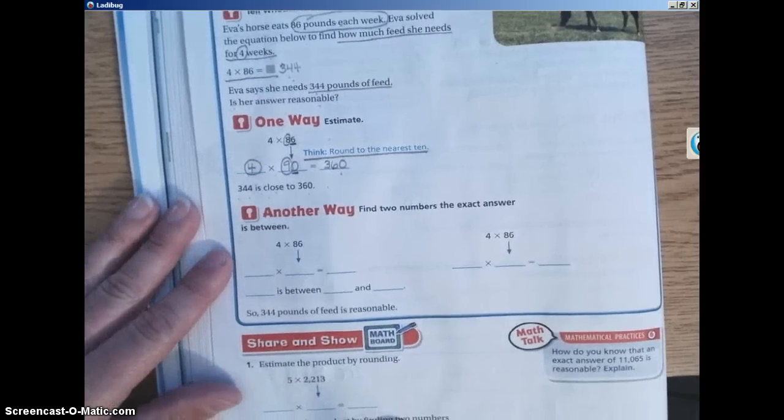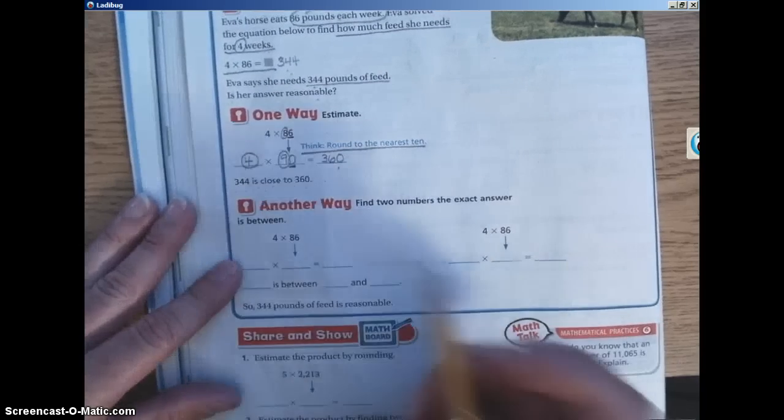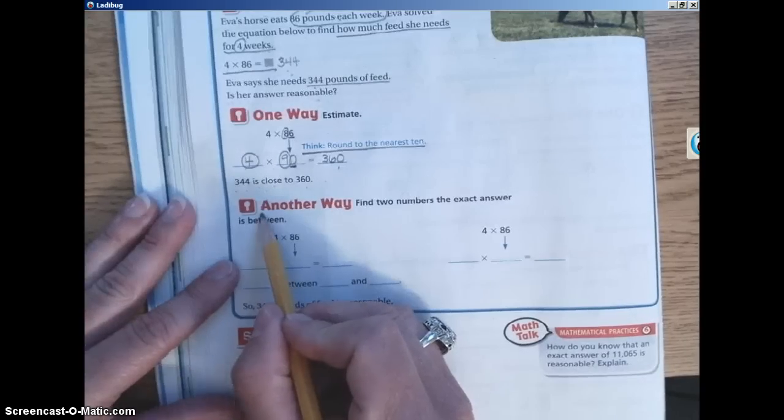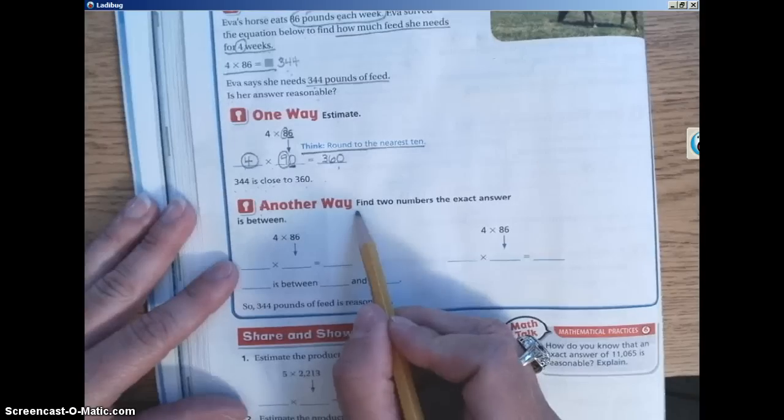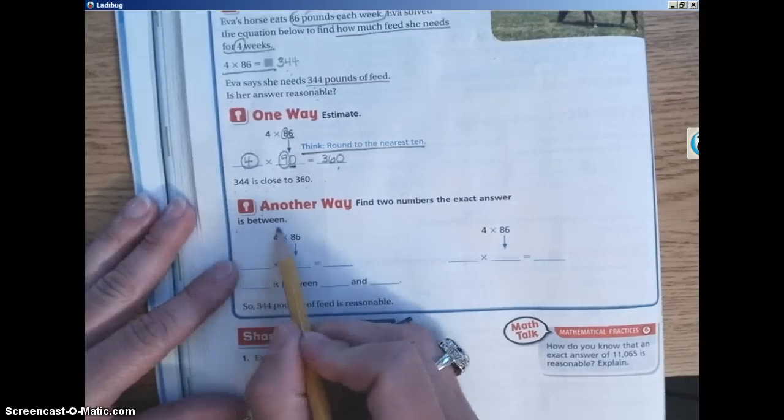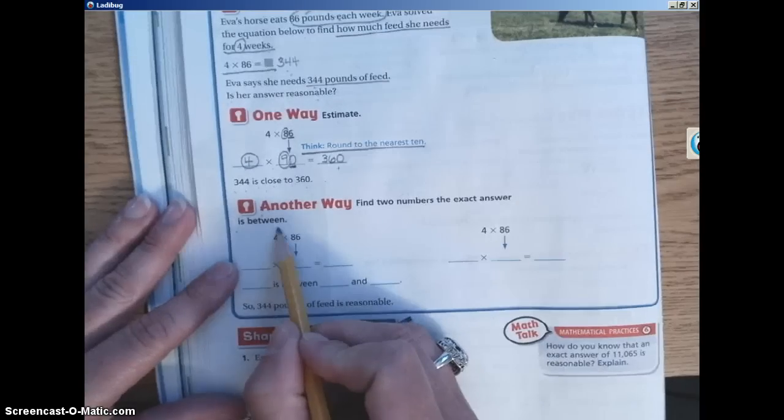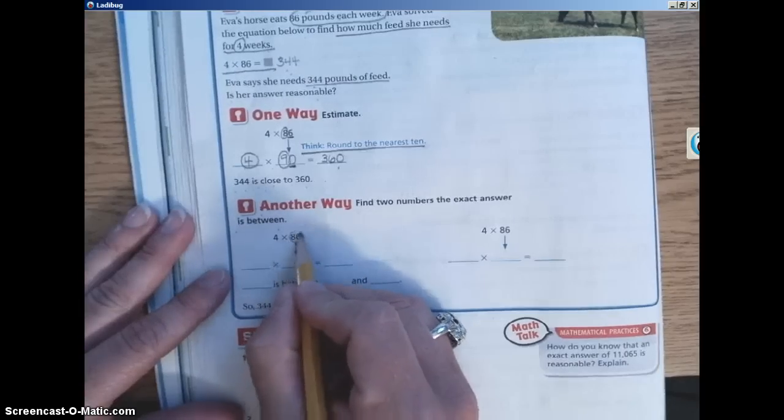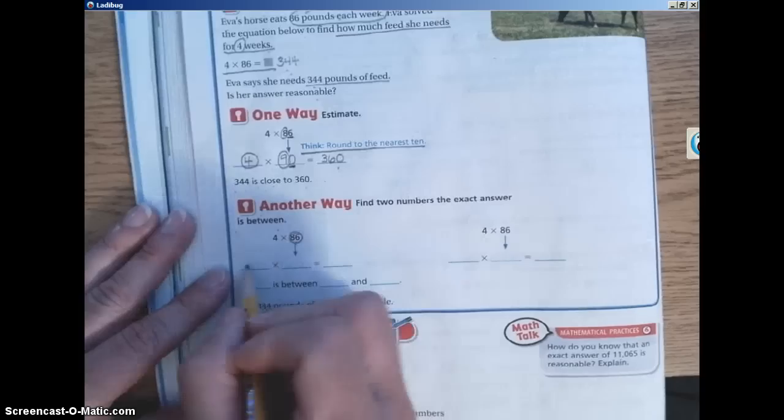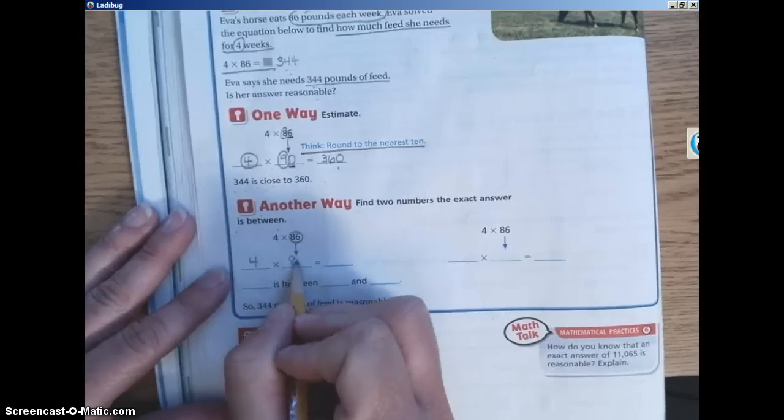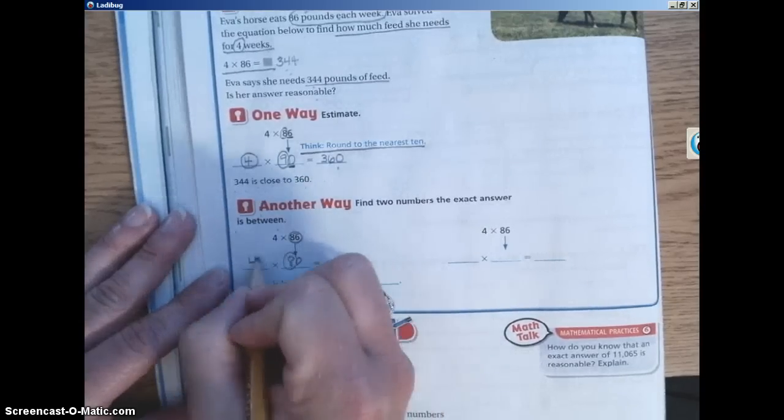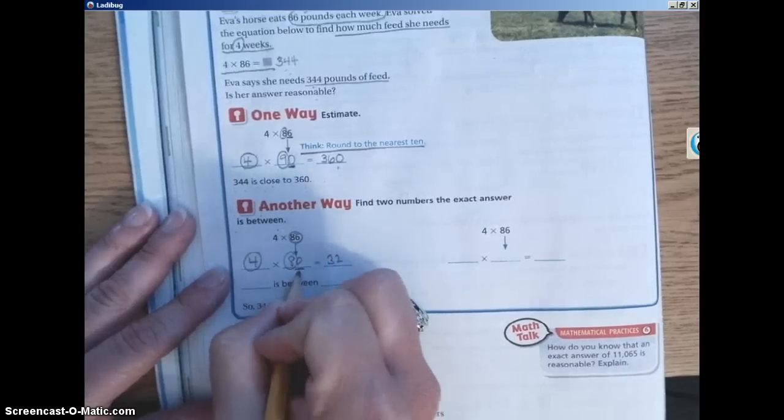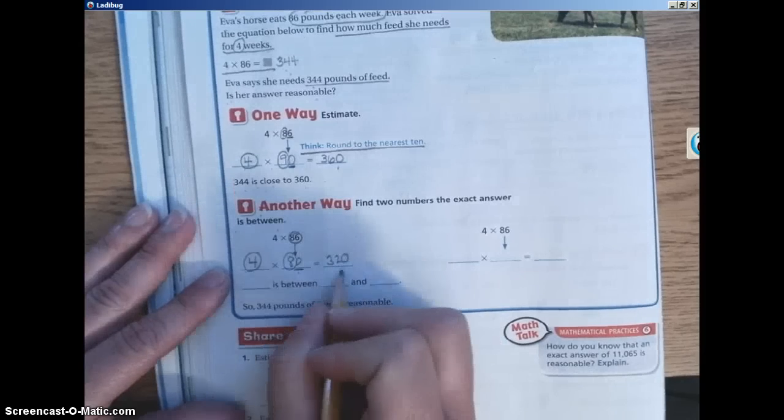And like Ms. Hartman said earlier, GoMath always gives us several ways to solve a problem. Using the method that, the second way that you learn from the first page, another way is to find the range. So find two numbers, the exact answer is between. So the first one would be 4 times. And this time we're going to go down. Because we know that 86 is between 80 and 90. So we have 4 times 80. Using our mental math, 4 times 8 is 32. Bring our 0 from the factor over. So we have 320.